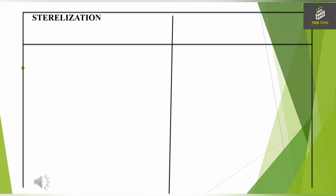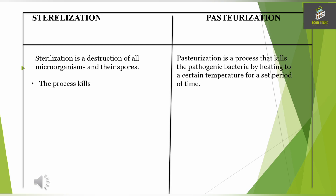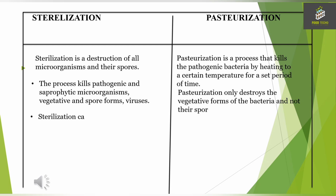So what are the major key differences between the two terminologies? Sterilization is a destruction of all microorganisms and their spores, while pasteurization is a process that kills the pathogenic bacteria by heating to a certain temperature for a set period of time. Sterilization kills pathogenic and saprophytic microorganisms, vegetative and spore forms, viruses, etc., while pasteurization only destroys the vegetative forms of the bacteria and not their spores.